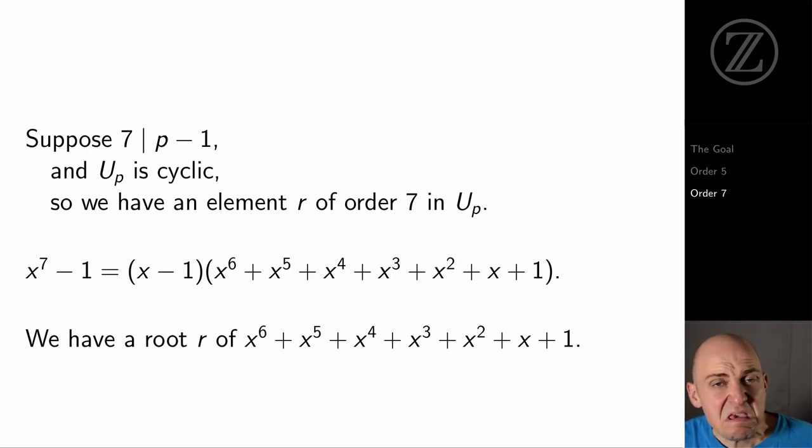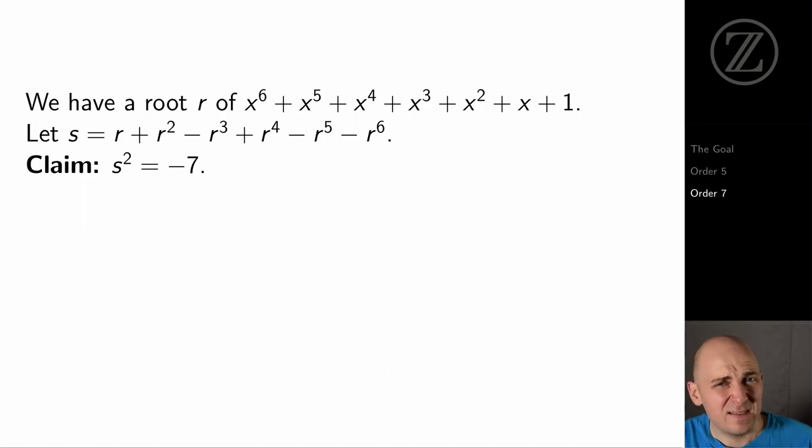So I'm going to suppose I've got a prime p, and I'd like p to be 1 mod 7. So p could be a prime like 29, 43, 71, something that's 1 mod 7. And because I know that U_p is cyclic, when I know that p is 1 mod 7, I actually know that there's an element in U_p of order 7. So I'm going to call that element r. Now r is a root of the polynomial x to the 7th minus 1, but x to the 7th minus 1 factors as x minus 1 times x to the 6 plus x to the 5th plus x to the 4th plus x to the 3rd plus x squared plus x plus 1. And I know that r isn't a root of x minus 1, because if it were, it would just be 1. But I'm looking for an element that actually has order 7. So it must be a root of that other larger polynomial.